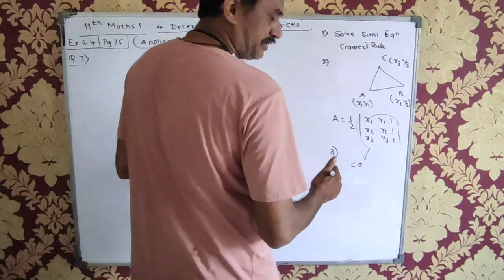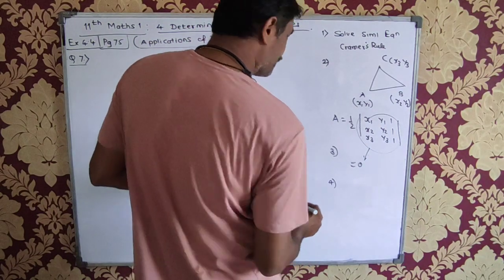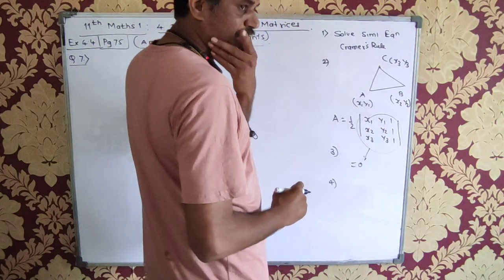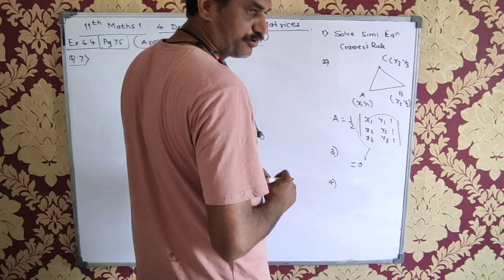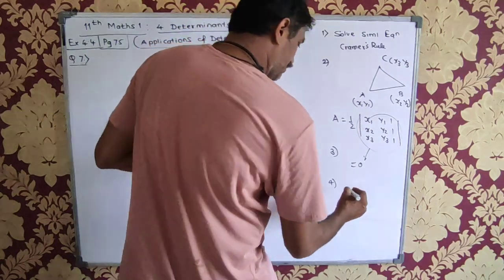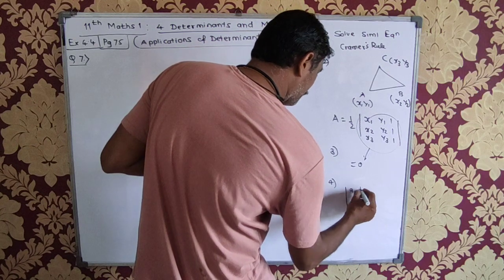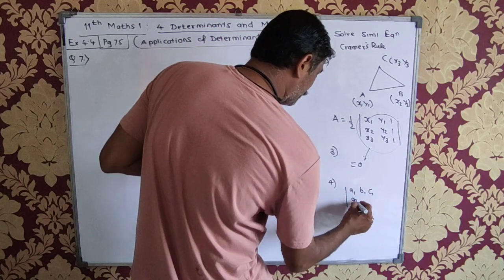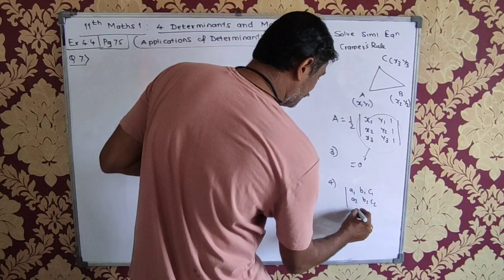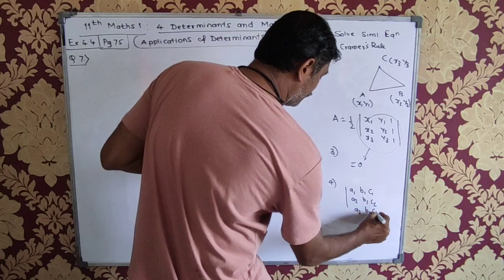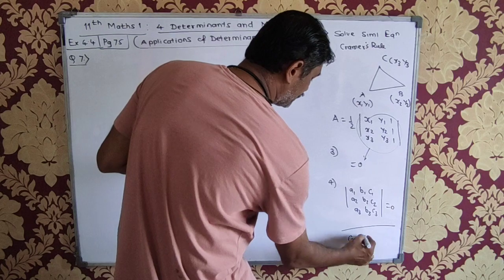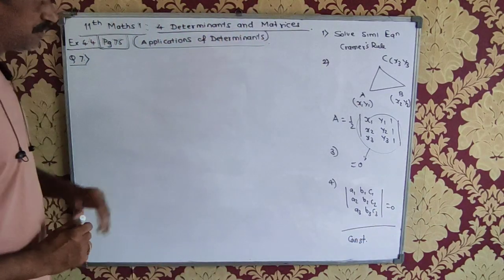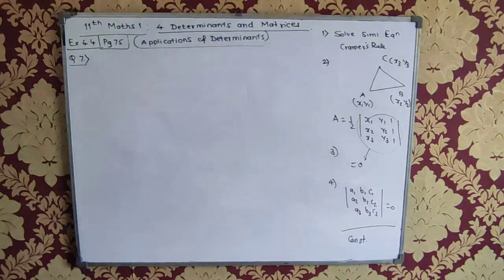We have already seen this. The fourth application is to check the consistency of the equations. Consistent equations are the equations which are having common solution. So here we have a1, b1, c1, a2, b2, c2 and a3, b3, c3. If this determinant is equal to zero, then the equations are said to be consistent. So these are the applications and we are solving the numericals based on this.